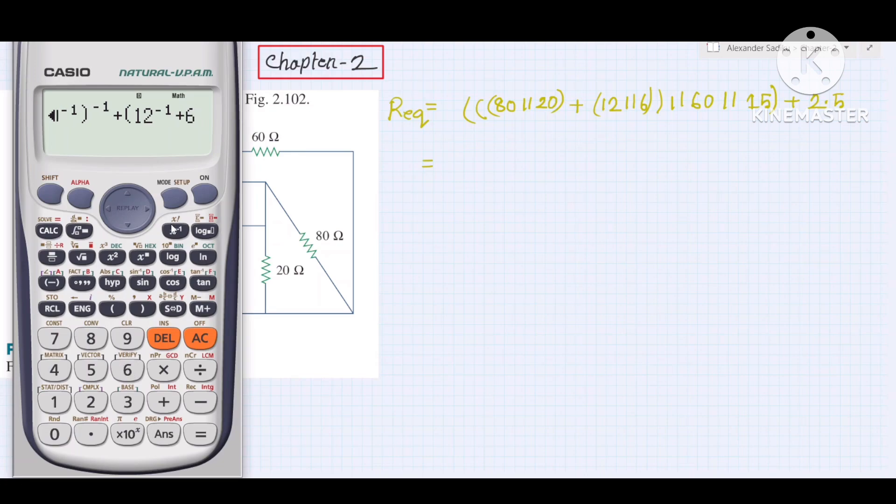Then plus 6 in parallel, inverse 1, close, inverse 1, close. Then this is in parallel, plus 60 in parallel inverse 1, then plus 15 in parallel inverse 1, close, then plus 2.5.